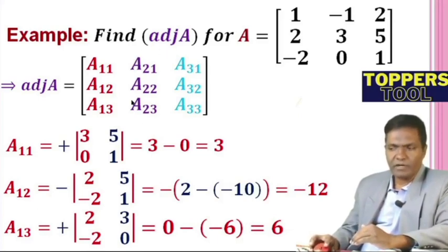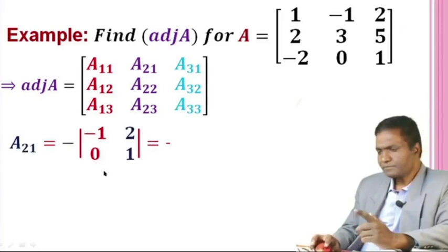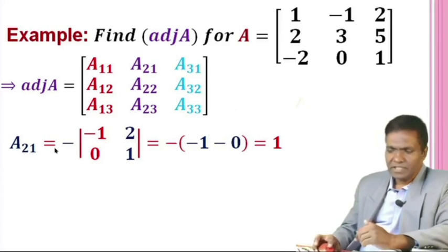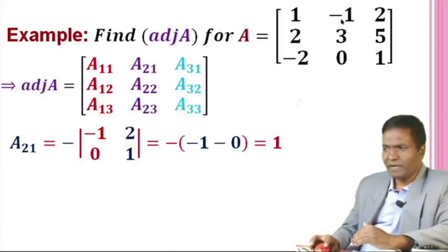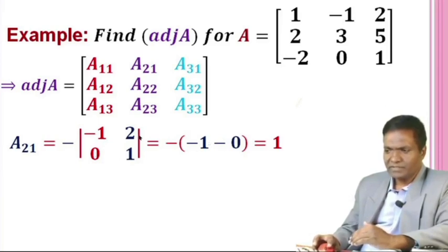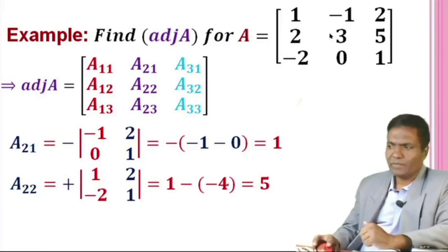Now find the cofactors of the second row. A21: the sign is minus, delete row 1 and column 1 — the remaining determinant for this position gives minus 1. So A21 equals minus 1. It is better to pause the video and make your own notes. Similarly, find all the remaining cofactors of the second and third rows.